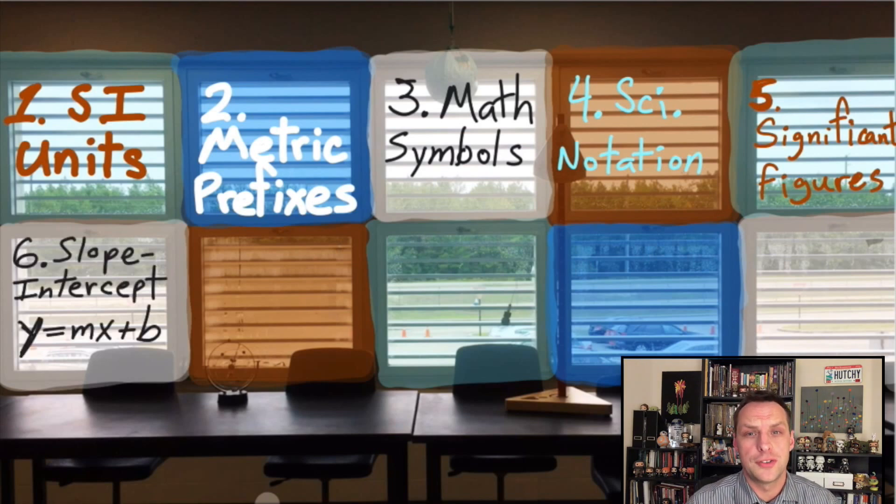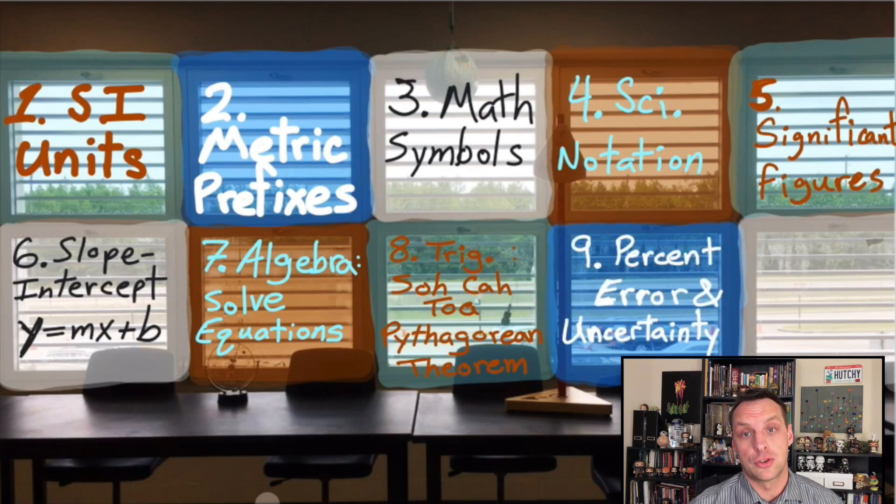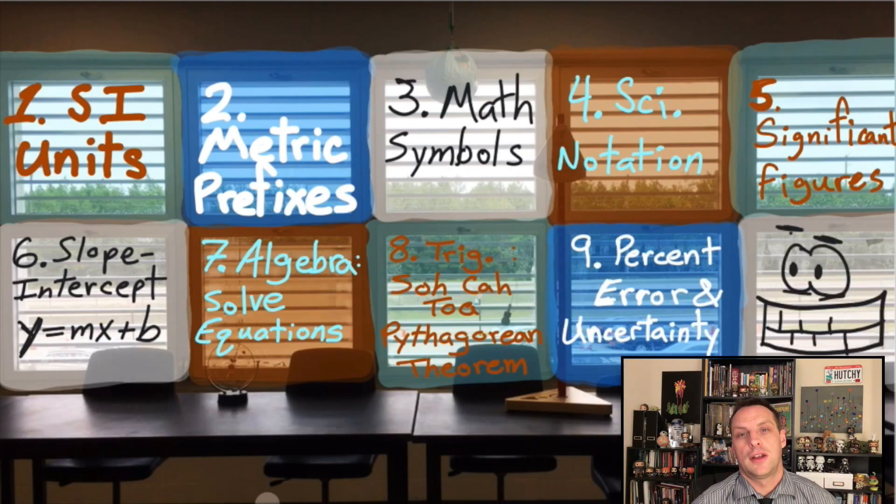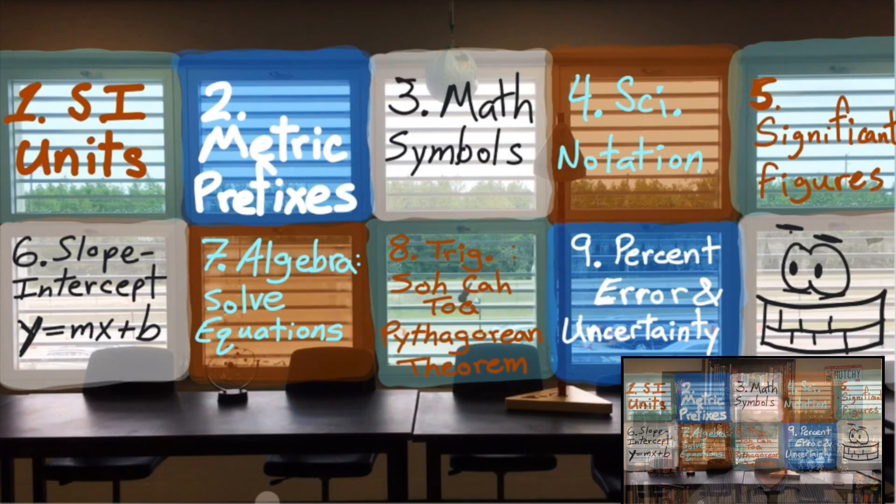Number six, slope-intercept form - the equation to graph a straight line; skill number seven, basic algebra - manipulate equations to solve them for a specific variable; eight, you need to use your basic trigonometry; number nine, you need to be able to calculate percent error, cut down on uncertainty, and know where your sources of error may have been.